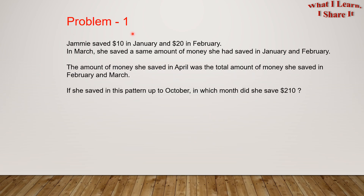Problem 1. Jami saved $10 in January and $20 in February. In March, she saved the same amount of money she saved in January and February. The amount of money she saved in April was the total amount of money she saved in February and March. If she saved in this pattern up to October, in which month did she save $210?